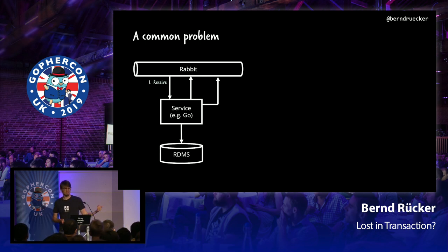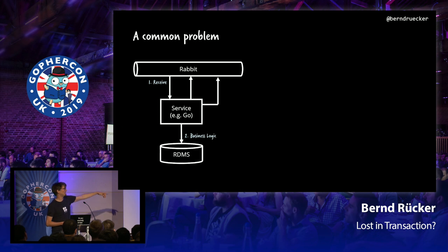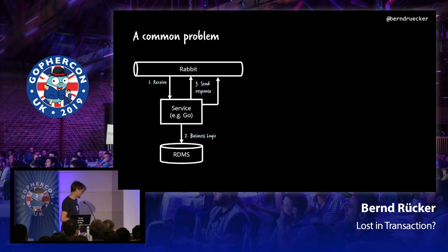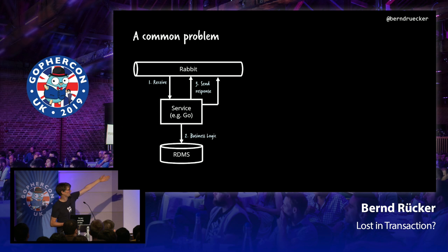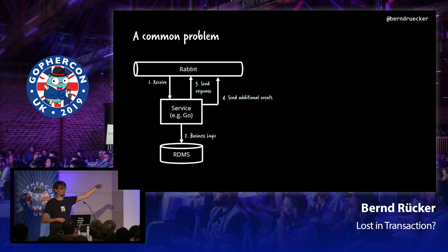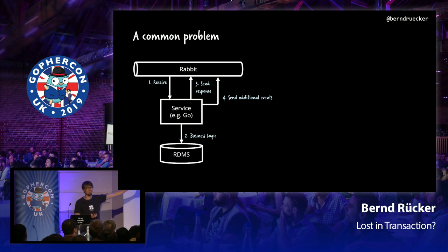If you do that, it's actually not that easy as it sounds to get into a consistent state. So let's assume you receive the message and do the business logic. Then you have to think: do I commit the transaction in the database now or not? If you commit it, your service can crash and you may never send the response message. If you wait to commit until after you send the response message, you send it to Rabbit, make that call, and then it crashes before you commit — because that's not a transactional operation. You can't do a joint transaction here. That leaves you in a state where you sent out a message but the business logic never executed. And if you send additional events, it just gets more complicated. It's a very common scenario, and we can already see it's not easy to reach consistency.